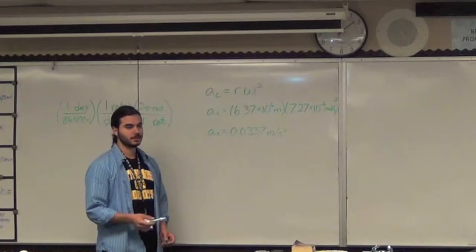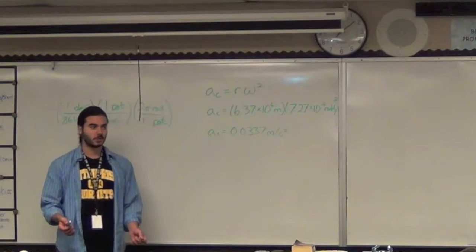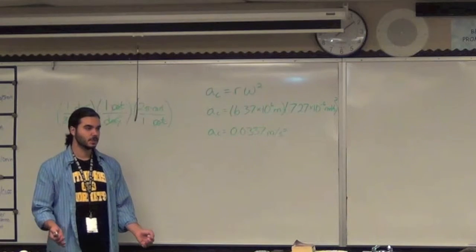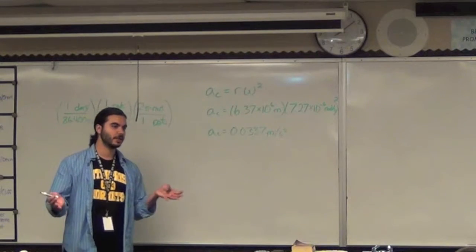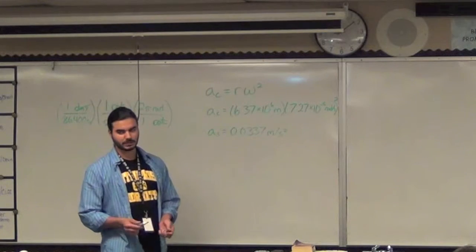If you actually figure out the ratio there, it is 1/290th. So, technically, someone who weighed 290 pounds would be made one pound lighter because of the centrifugal force, but again, that's relatively negligible.